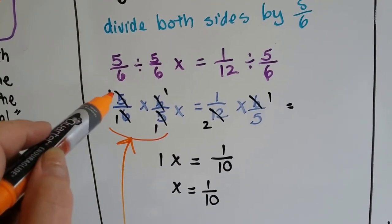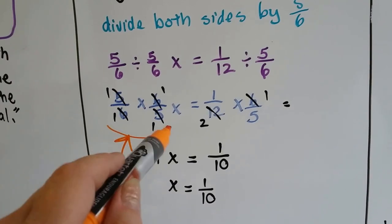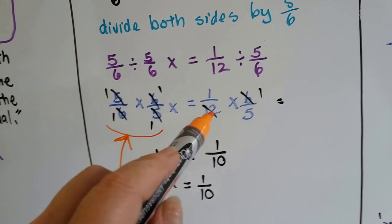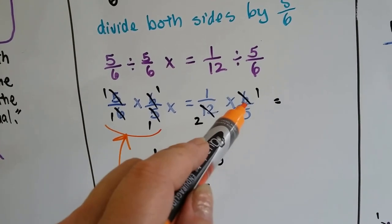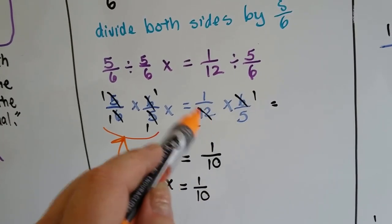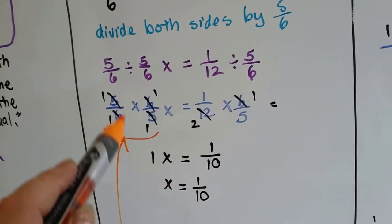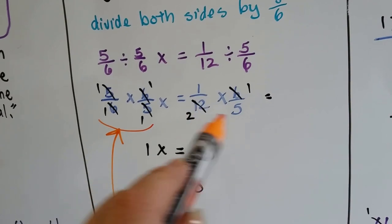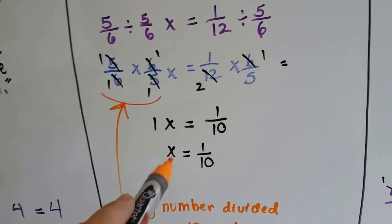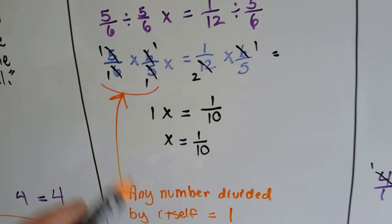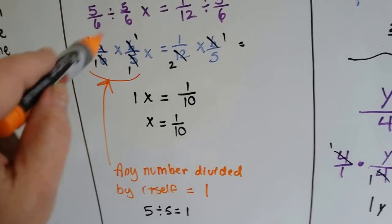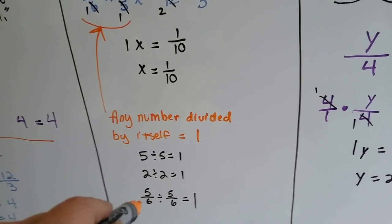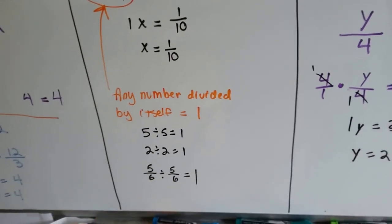So we end up getting this 5 cancelling out that 5 and this 6 cancelling out that 6. So we end up with a 1x and then there's 1 six here and 2 sixes here in the 12. So that's a 1 and that's a 2. And we end up with 1x is equal to 1/10 because 2 times 5 is 10. So x is equal to 1/10. So any number divided by itself is going to be 1. 5 divided by 5 is 1, 2 divided by 2 is 1, 5/6 divided by 5/6 is 1.